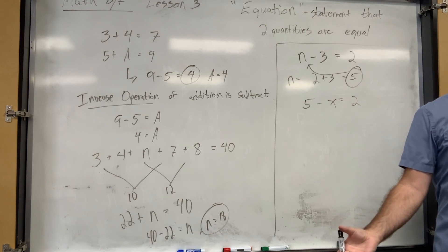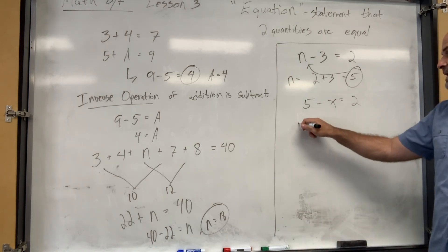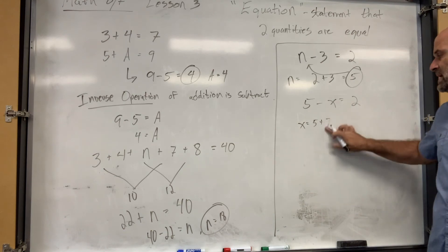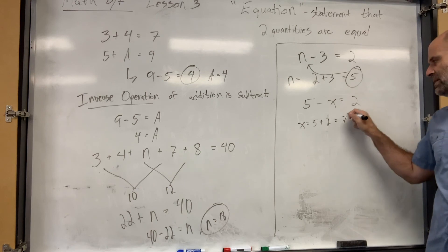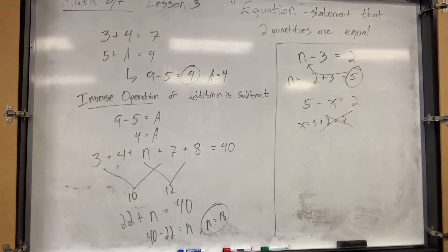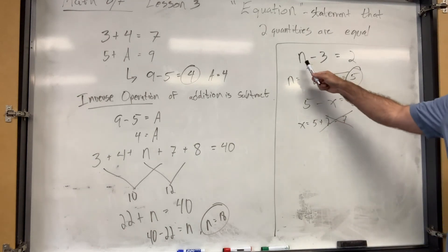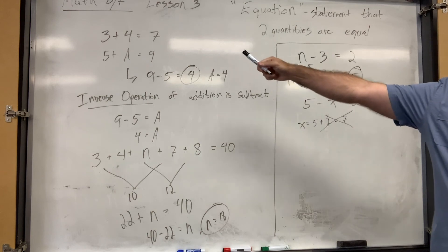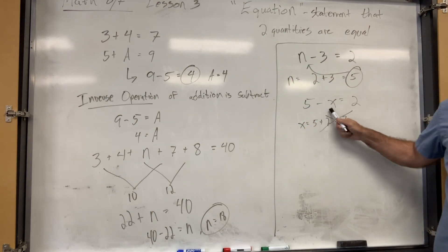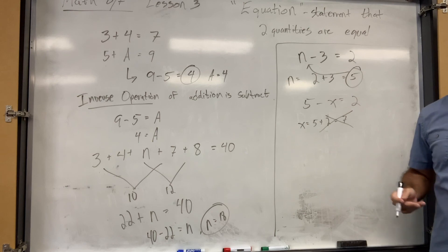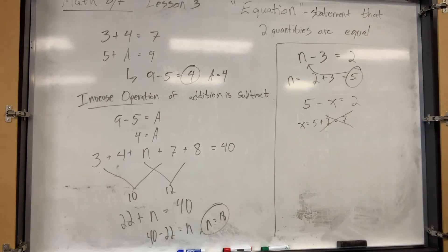What about this problem: 5 minus x equals 2? How do you find x? Do you just do the opposite of subtraction and add? If you add, x equals 5 plus 2, which is 7. Is the answer 7? No. Remember there's a different word: minuend minus subtrahend. It depends on which one you're missing. If you're missing the minuend, you can just go backwards and add. But here, since 5 minus 3 is 2, you get the 3 from 5 minus 2 — it's another subtraction problem.